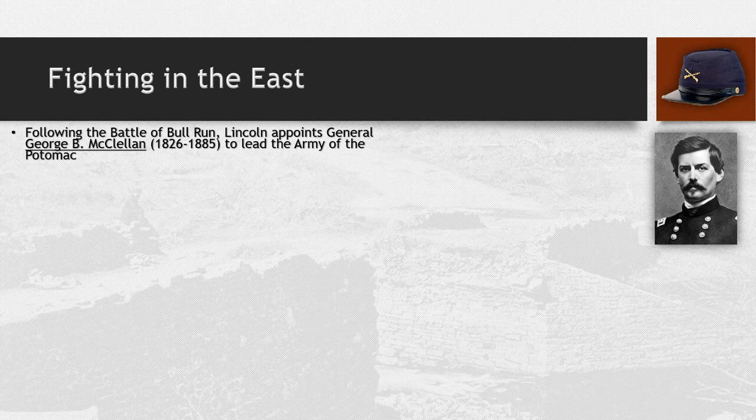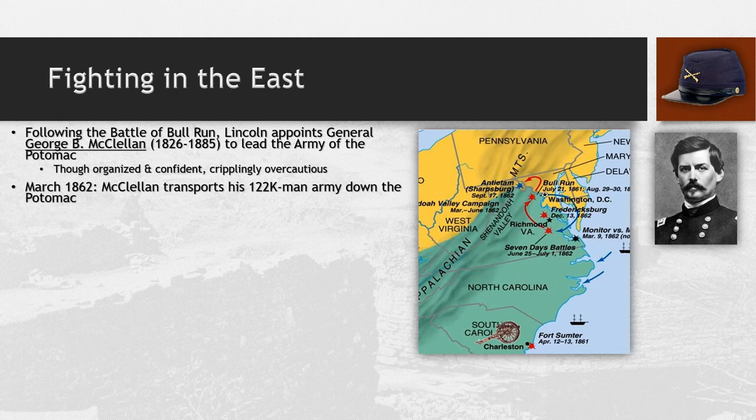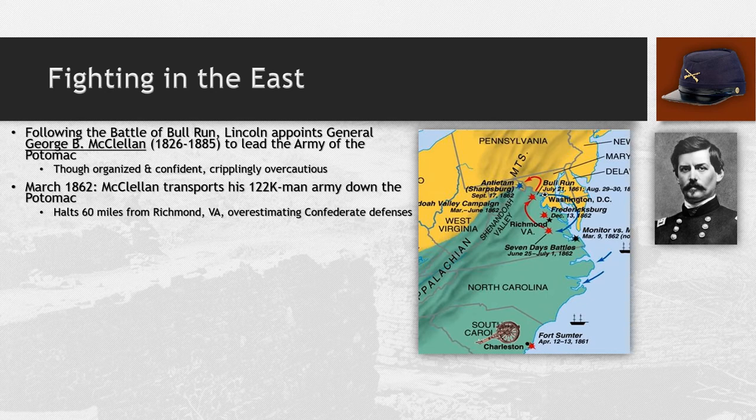In the east, following Bull Run, Lincoln appoints General George B. McClellan to lead the Army of the Potomac. Although McClellan is organized and confident, he is extremely overcautious to the point of being crippled by it. In March of 1862, McClellan takes a 122,000-man army down the Potomac River but stops 60 miles from Richmond, Virginia, believing Confederate defenses are extremely heavy — when in reality they're not. Had he continued, he might have been able to capture Richmond and potentially turned the tide of war very quickly.